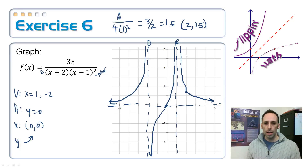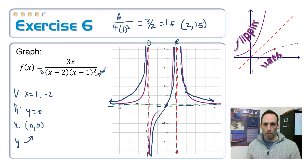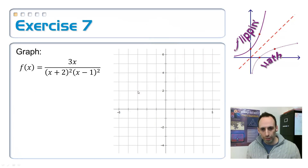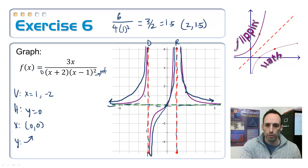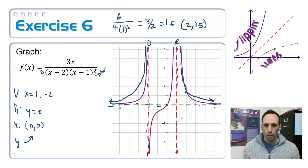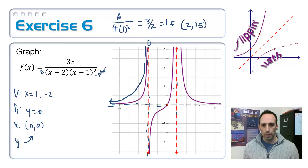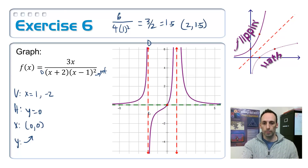Let's see how I did — asymptotes, vertical, horizontal, point intersection, and then the graph. I need to get a little bit closer to those asymptotes. Clean that up a little bit, make it look pretty.